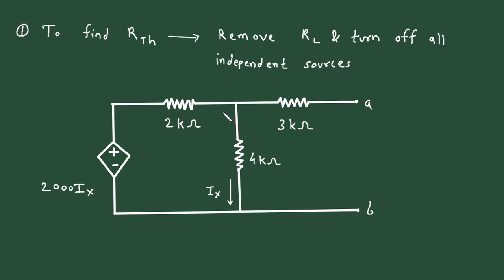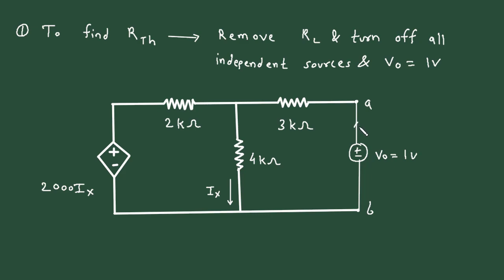Also we can see there is no independent source here; there is only one dependent source. Then next, consider Vo equal to 1 volt. Here we will consider a voltage source of 1 volt, so Vo equals 1 volt. This current will be current Io. From Vo and Io we can find the value of Rth: Rth is equal to Vo divided by Io, which is 1 divided by Io.